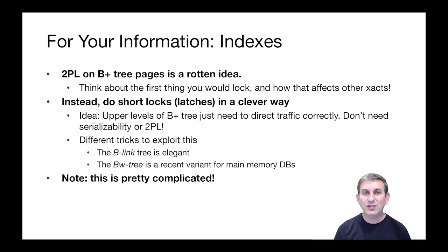Instead, there are schemes that are going to use non-two-phase locking — very short locks, which are sometimes called latches to distinguish them from two-phase locks, and they're used in a clever way. The general idea is that the upper levels of the B-tree don't actually hold data. They're just there to route traffic, that is to say, to route query searches to the right data in the leaves. And so we actually don't need the upper levels of the B-tree to be serializable, and we don't need 2PL. We just need to make sure that the upper levels always eventually route traffic to the right spot.